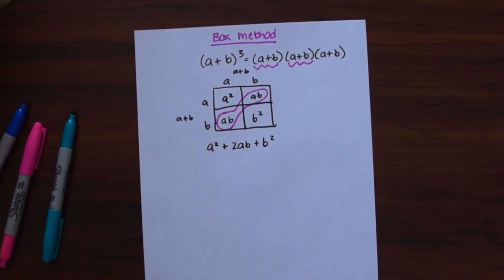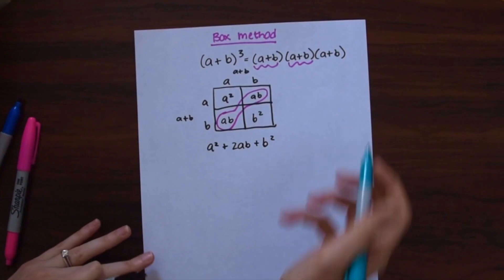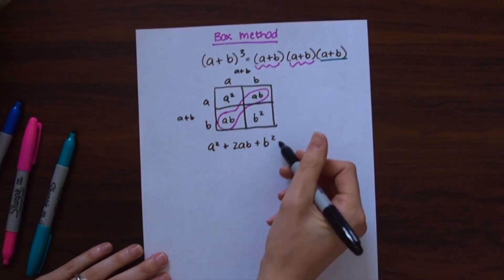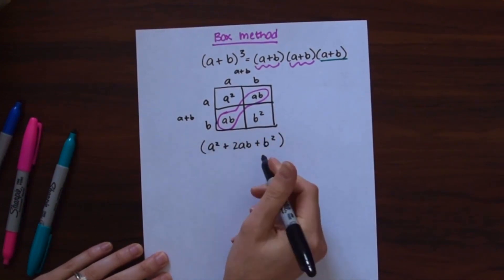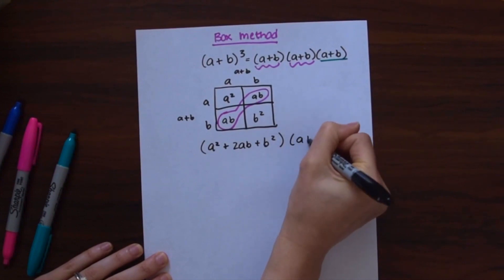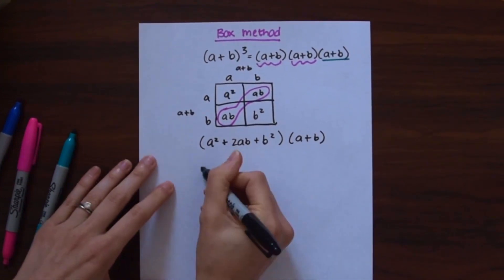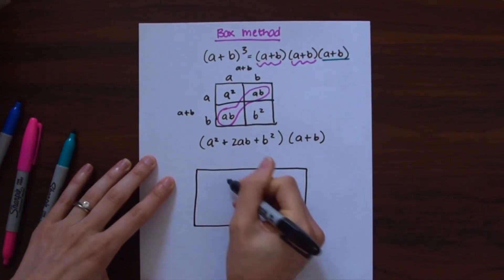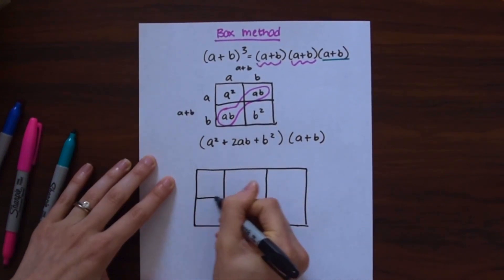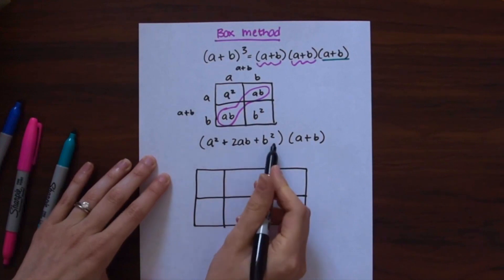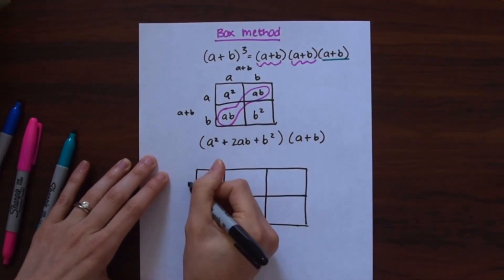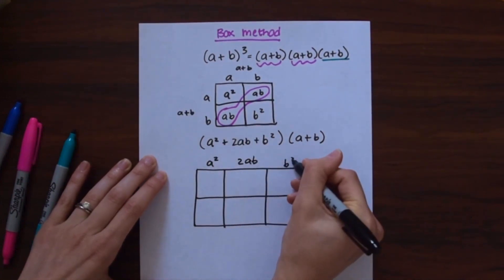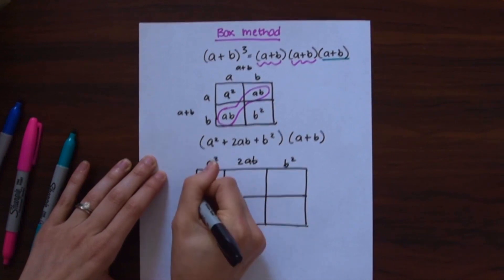You might feel like you're done, but don't forget we still have this (a+b) that we need to multiply. So we're going to bring that back down here. We have (a² + 2ab + b²), which we just found, now times (a+b). To find this we're going to need to make a bigger box — three columns and two rows — because there are three terms times two terms. So we write a², 2ab, b² across the top and a, b down the side.